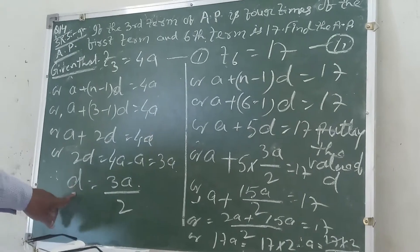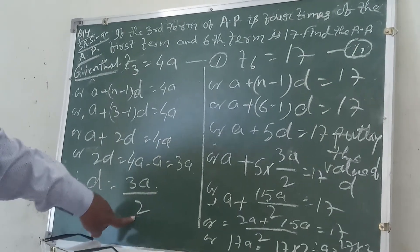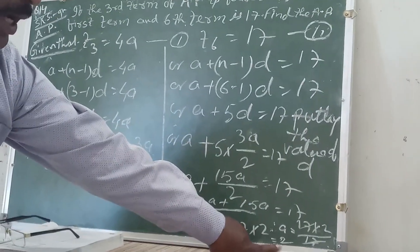D equals 3A by 2, so D equals 3 into 2 by 2 equals 3.